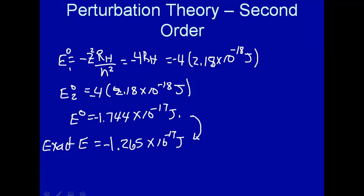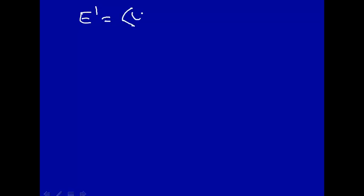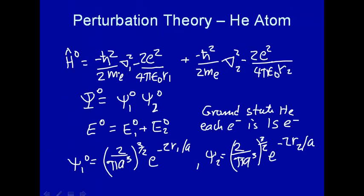So what we're going to do is apply perturbation theory to get a correction to this calculated energy and hope it will become closer to the exact energy. The first-order perturbation to the energy is E¹ = ⟨ψ⁰|H'|ψ⁰⟩ — the zero-order wave function operating with the perturbed Hamiltonian times the zero-order wave function. The zero-order wave function is ψ1⁰ times ψ2⁰.